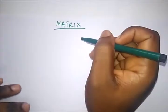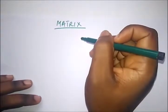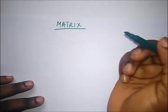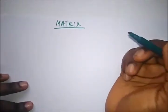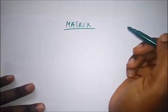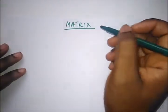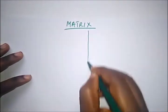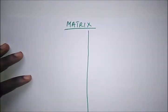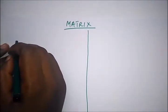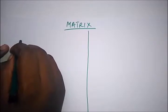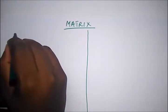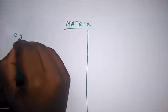Hello viewers, welcome to Destined to Win Tutorials. Today we are going to be looking at matrices. A matrix is a group of numbers or elements arranged in rows and columns with enclosed brackets.